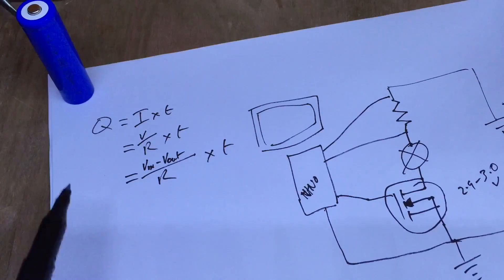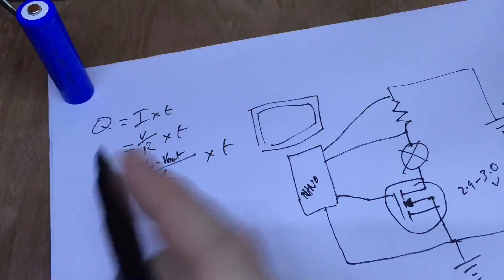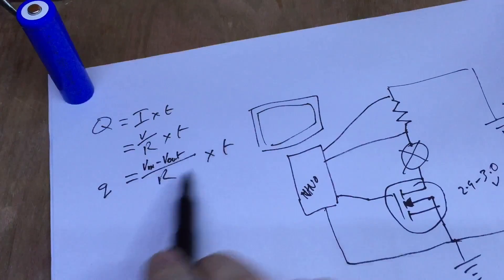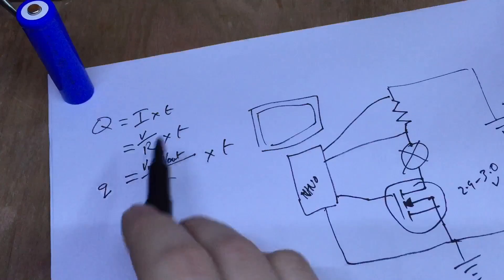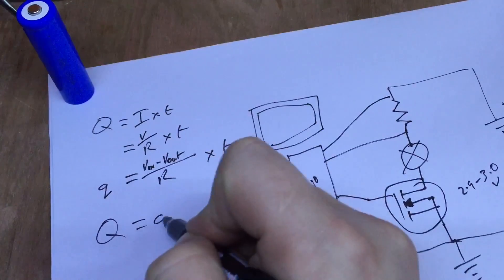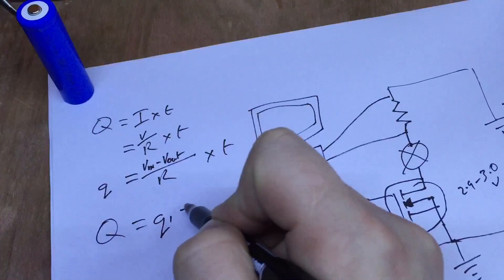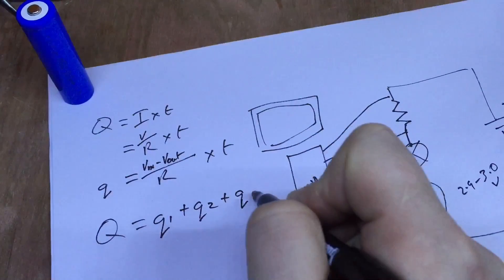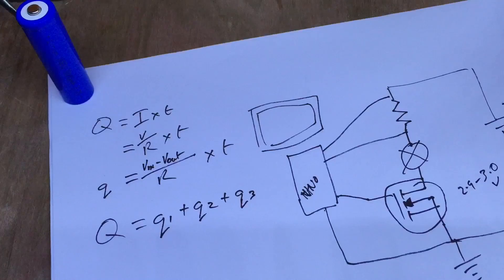So if we calculate this, I'm going to substitute with a small q every 5 seconds, for example, and Q, the total charge, will be q1 plus q2 plus q3, etc.